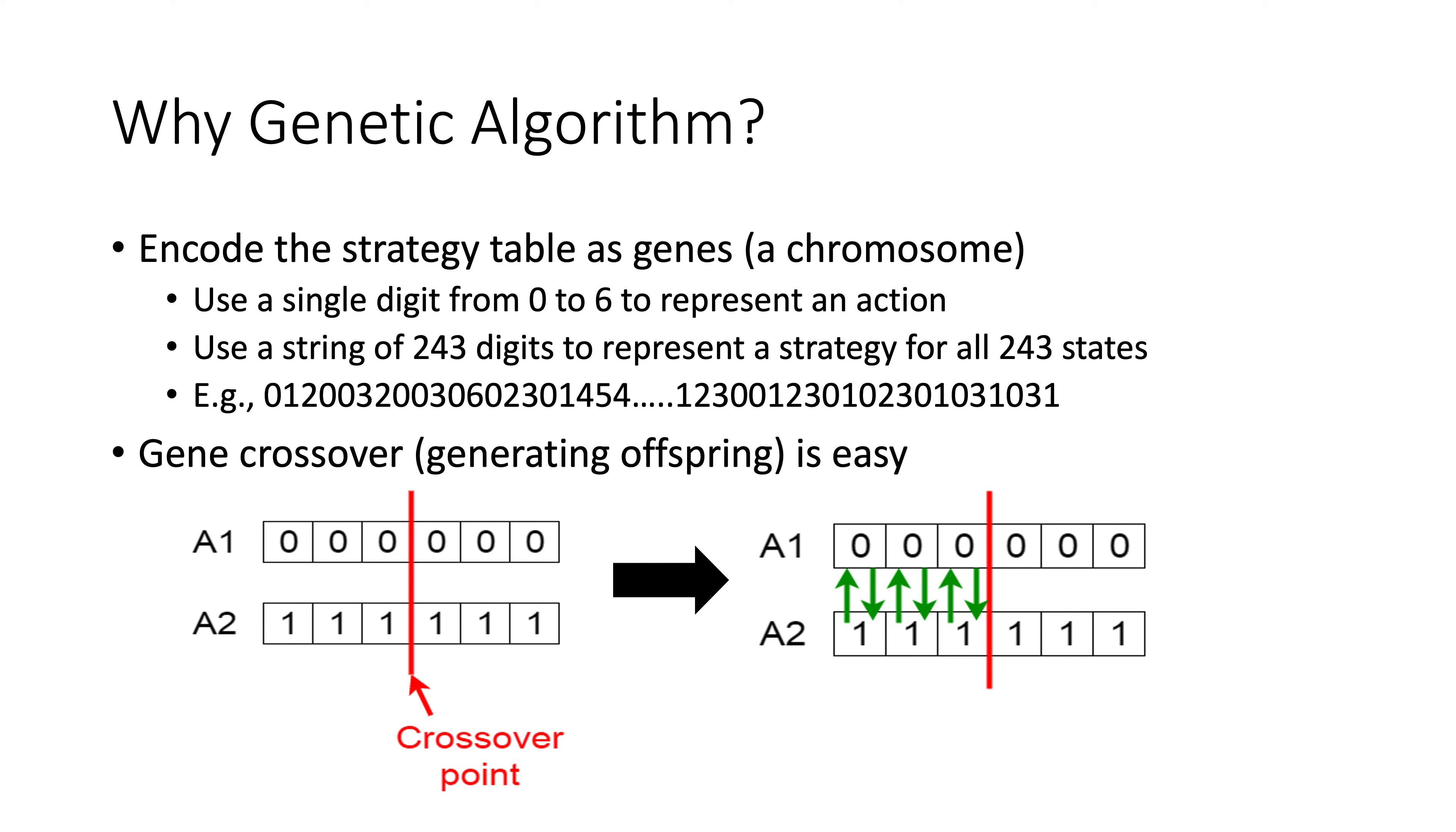First reason, it's easy to use a string of digits to represent a strategy. We use a single digit from 0 to 6 to represent an action, and then use a string of 243 digits to represent a strategy for all 243 states with some predefined order. This string contains all the information Jerry needs to make an action under all possible states. We call this string genes, or a chromosome.